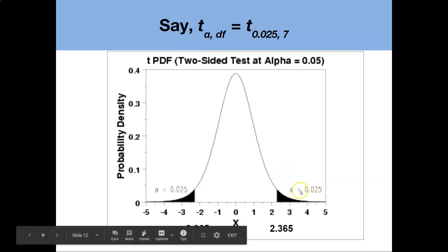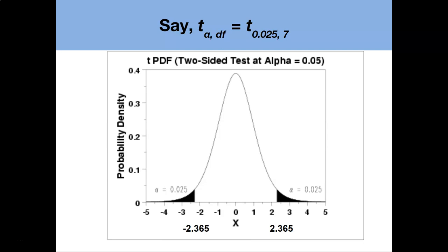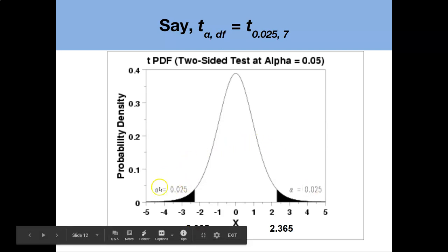That would be the point where on the right all values or the area of the curve represents zero point zero two five area of that curve or about two and a half percent. The same thing for the other side of the curve where it represents about two and a half percent.